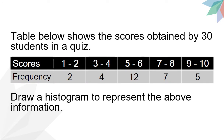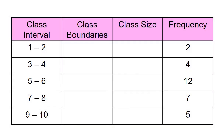Let's look at the first example. We need to draw a histogram to represent the scores obtained by 30 students in a quiz. A frequency distribution table showing the class interval, class boundary, class size, and frequency is constructed. The first step is to find the class boundary. The class boundary is the midpoint between the upper and lower limits of adjacent classes.